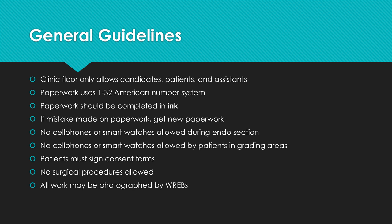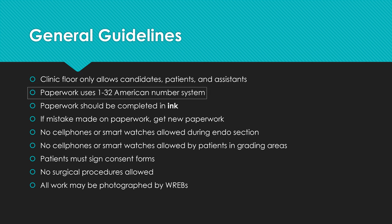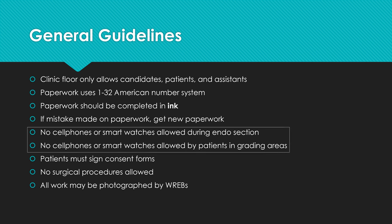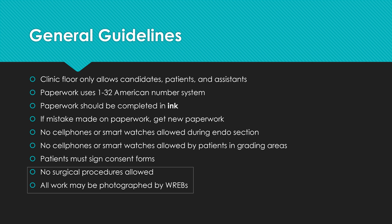General guidelines: only candidates, patients, and assistants are allowed on the clinic floor. All paperwork uses the standard American numbering system, 1–32. All paperwork must be done in ink — no pencil. If you make mistakes, get a new paper and rewrite it. No cell phones or smart watches during endo for candidates. Patients must leave their cell phones and smart watches with you before entering the grading area. Patients must sign all consent forms — see pages 24 to 27. No surgical procedures are allowed, and REBS may photograph your work as needed.